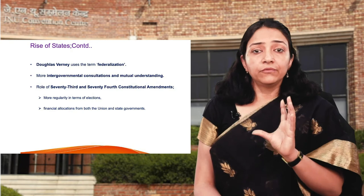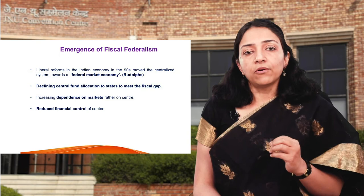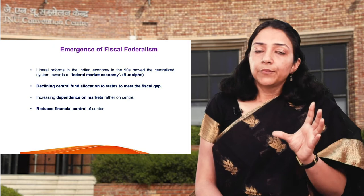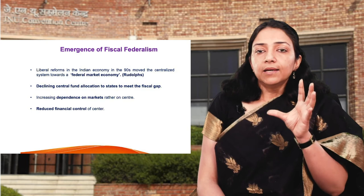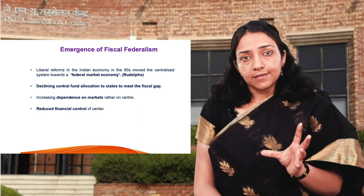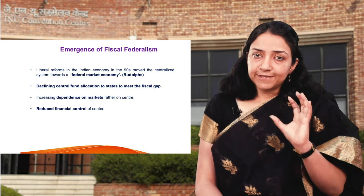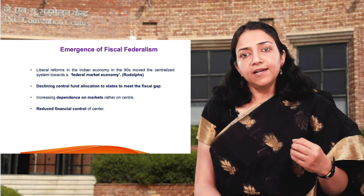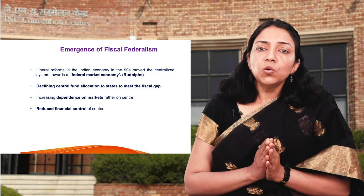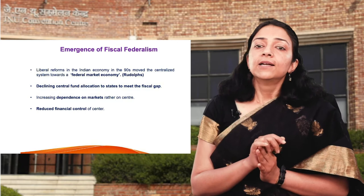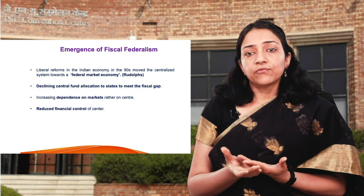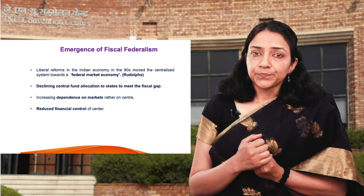The major trend that totally reshaped federal polity was the emergence of fiscal federalism. Rudolf termed this era as the 'federal market economy.' The Indian economy, earlier very centralised with industrial development and investment under strict central control, was liberalized in the 90s. Markets became the new driver of growth for states, as states had the option to explore markets for investment and to meet their fiscal demands.